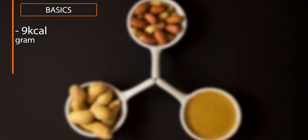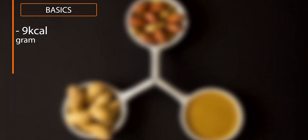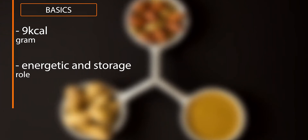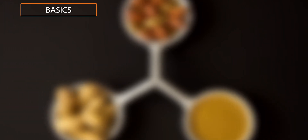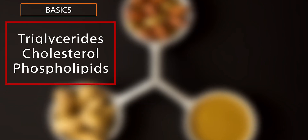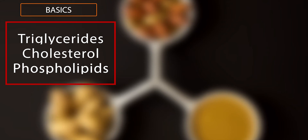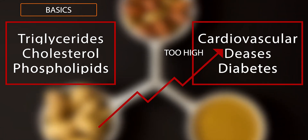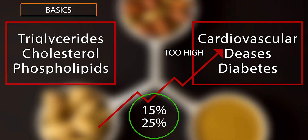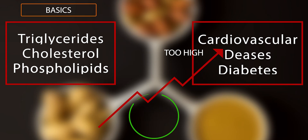As nutritional values we need to mention that fats have 9 calories per gram. They have an energetic role and also a storage one for vitamins. Our body can digest 97% of the ingested fats. In our blood we can identify the fats in three forms such as triglycerides, cholesterol and phospholipids. If the ingestion is too high it can cause different diseases such as cardiovascular disease, type 2 diabetes and dyslipidemia. The ingestion must be between 15 and 25 percent of the daily calorie intake.